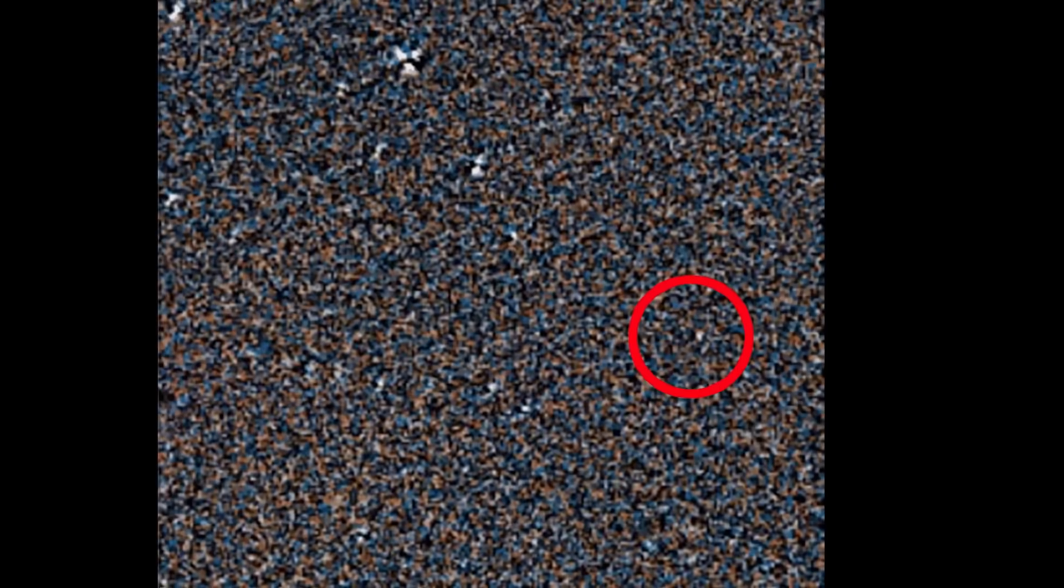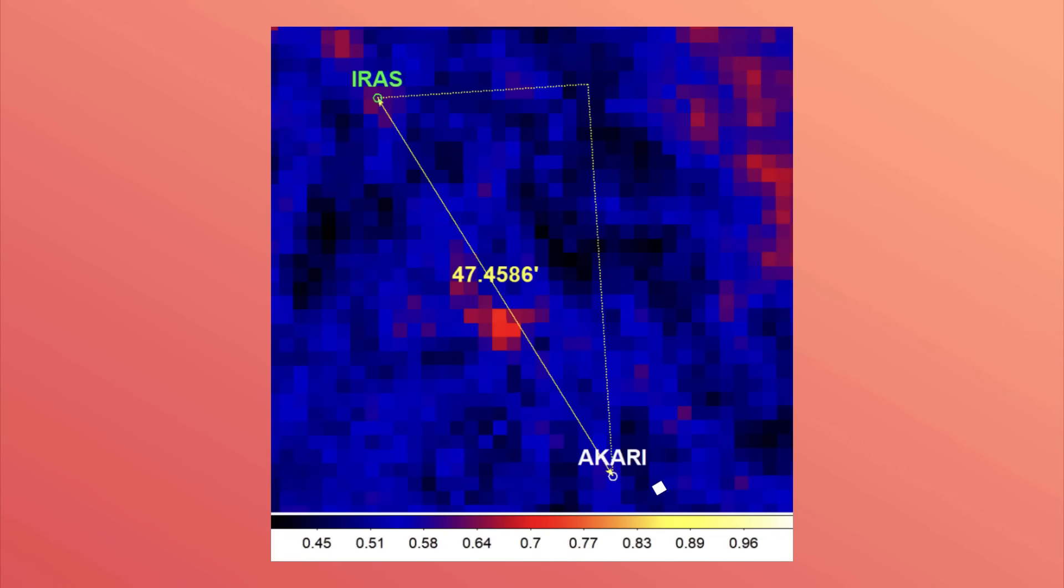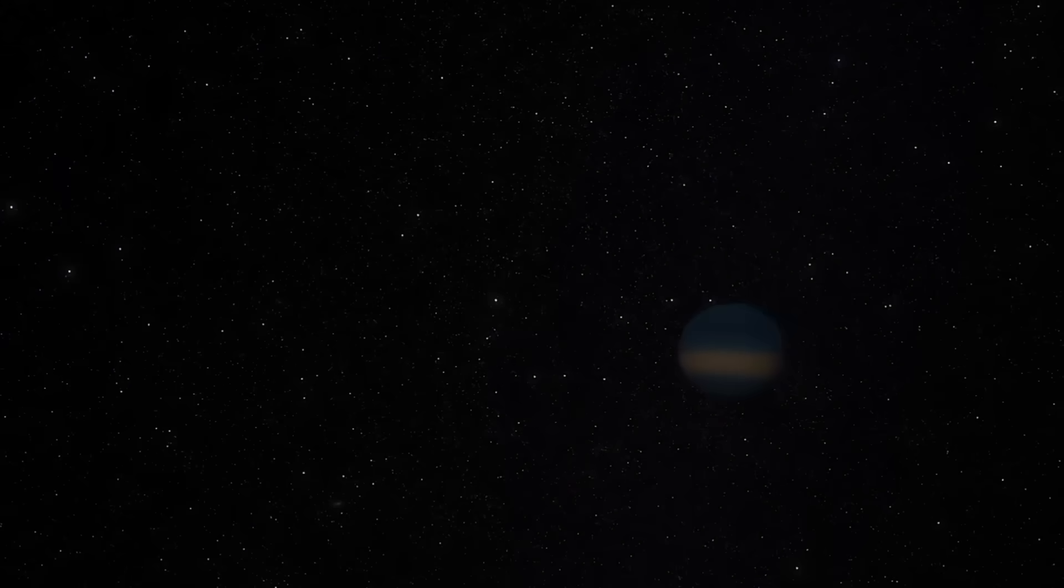And eventually, they found one. A faint dot in the IRAS data from 1983. And another dot, 47 arc minutes away, in the Akari data from 2006. Could it be the same object? Could it be Planet Nine? Possibly. Because based on its brightness in the infrared data, it would have to be more massive than Neptune.